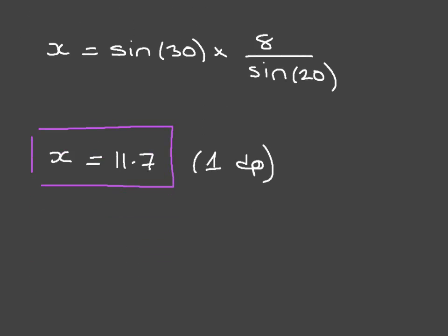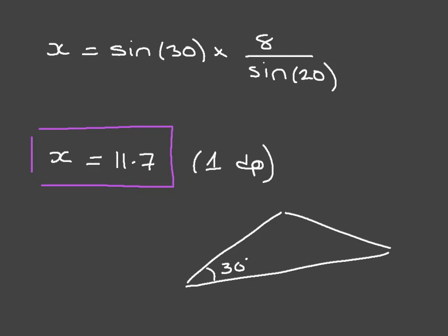We just found a side length in this triangle using the sine rule. To complete the diagram: we had this triangle where one interior angle was 30 degrees, another was 20 degrees, one side length was 8, and we found the side opposite the 30-degree angle to be 11.7, rounded to one decimal place.